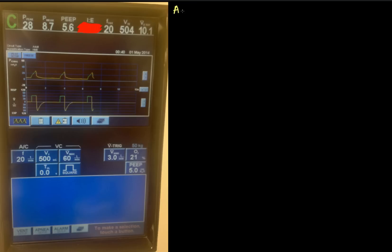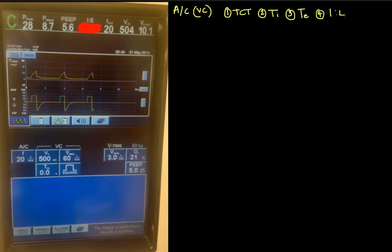Just to remind ourselves, we are in assist control, volume control. The four things we're going to calculate are: total cycle time, which should be familiar; inspiratory time, which is relatively new; expiratory time; and then we'll use those numbers to get our IE ratio. When you're ventilating a patient the IE ratio becomes quite important, especially when tackling different types of diseases and manipulating it to make ventilation more appropriate for your patient.